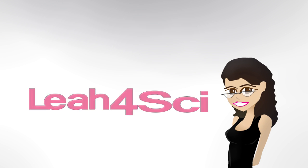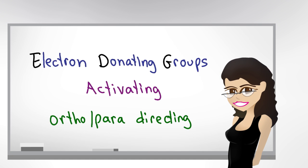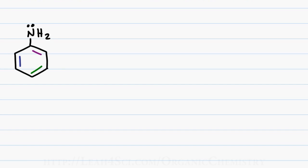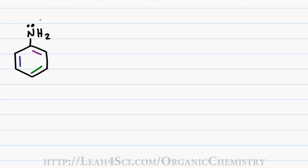In this video I will show you why electron donating groups are activating to the benzene ring and ortho-para directing. An electron donating group, as the name implies, is a substituent on benzene that has extra electron density that it's able to donate to the benzene ring. The example here is NH2, and as you can clearly see, we have a lone electron pair on the nitrogen that is highly electronegative and if need be can resonate into that benzene ring.